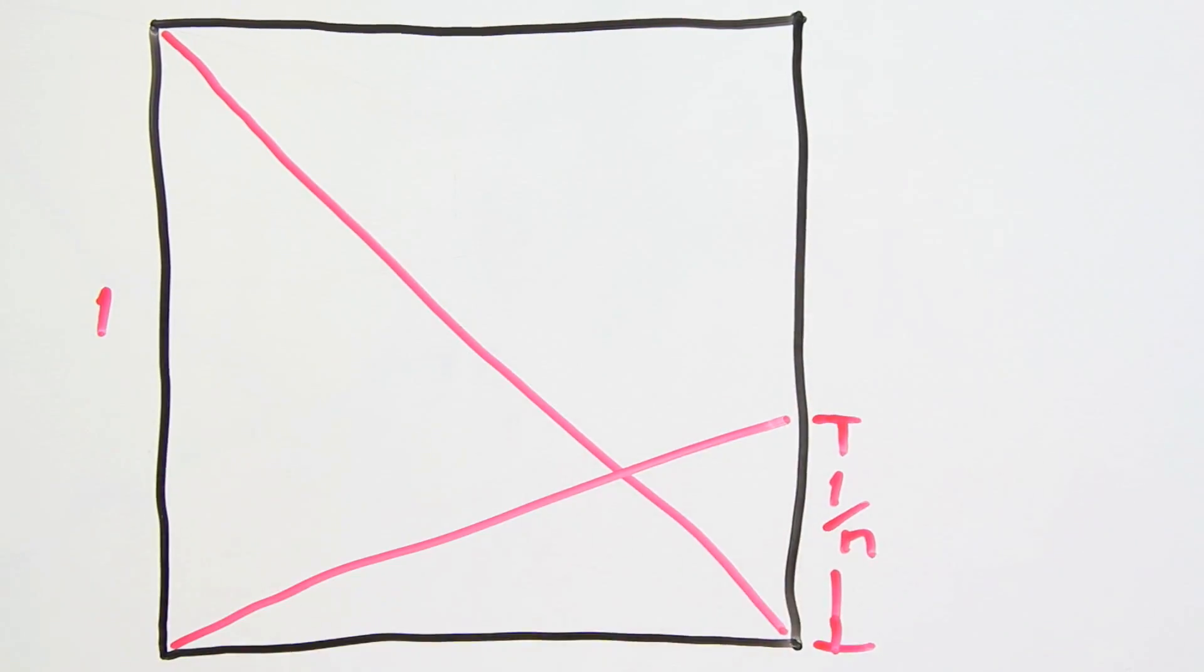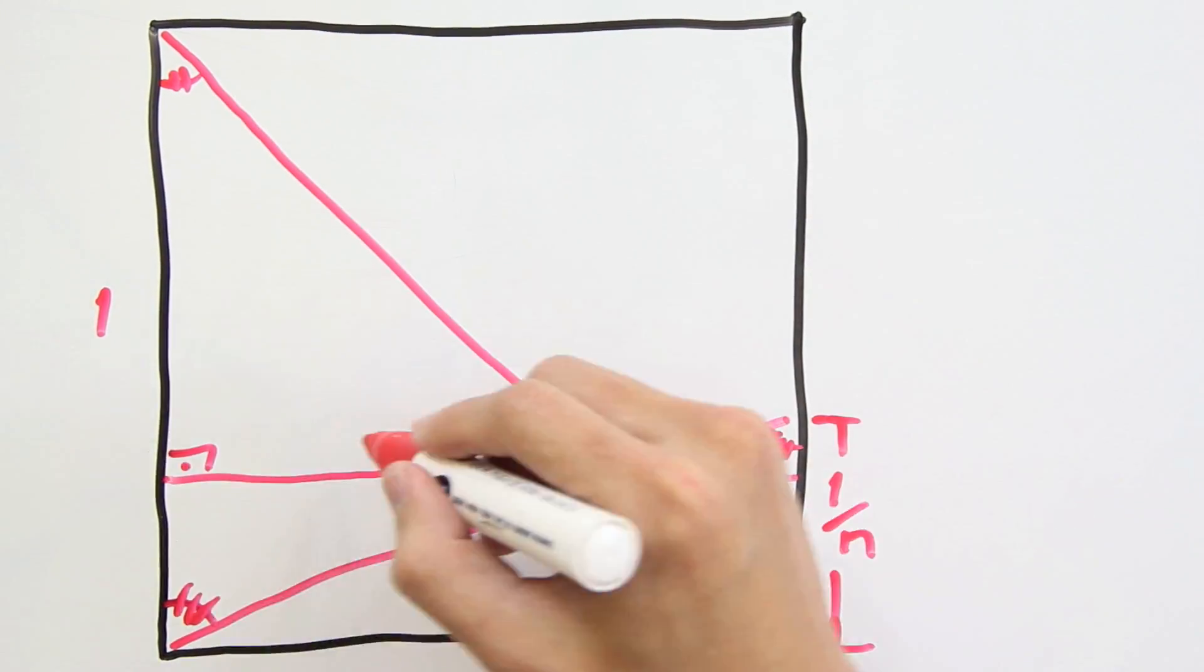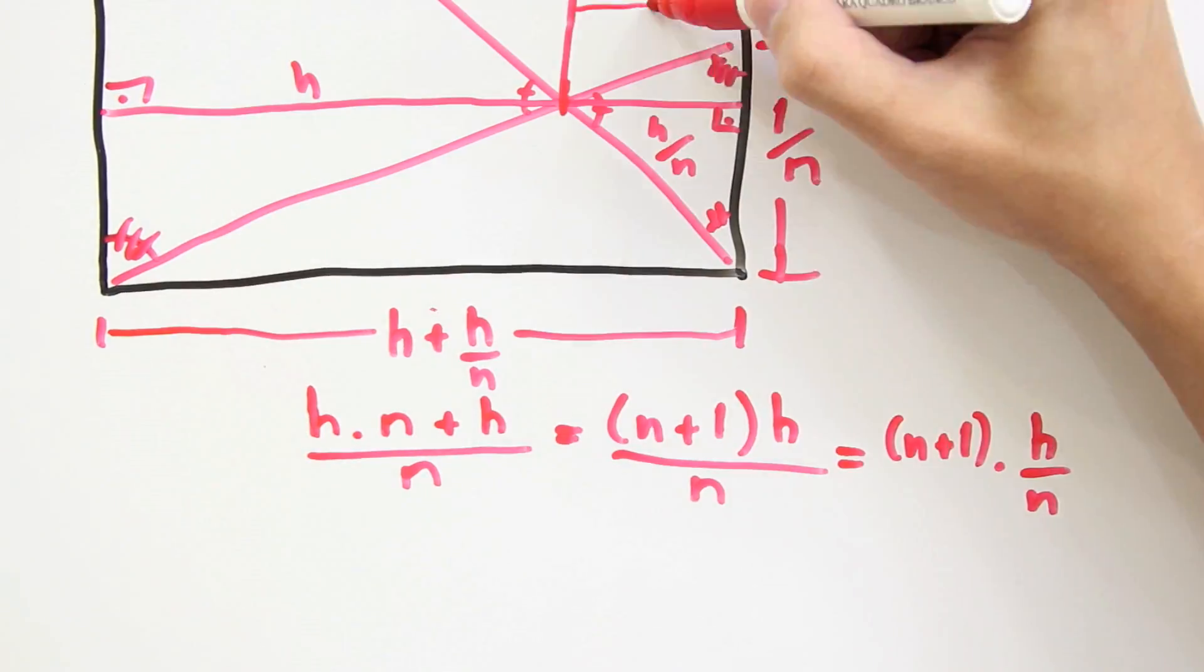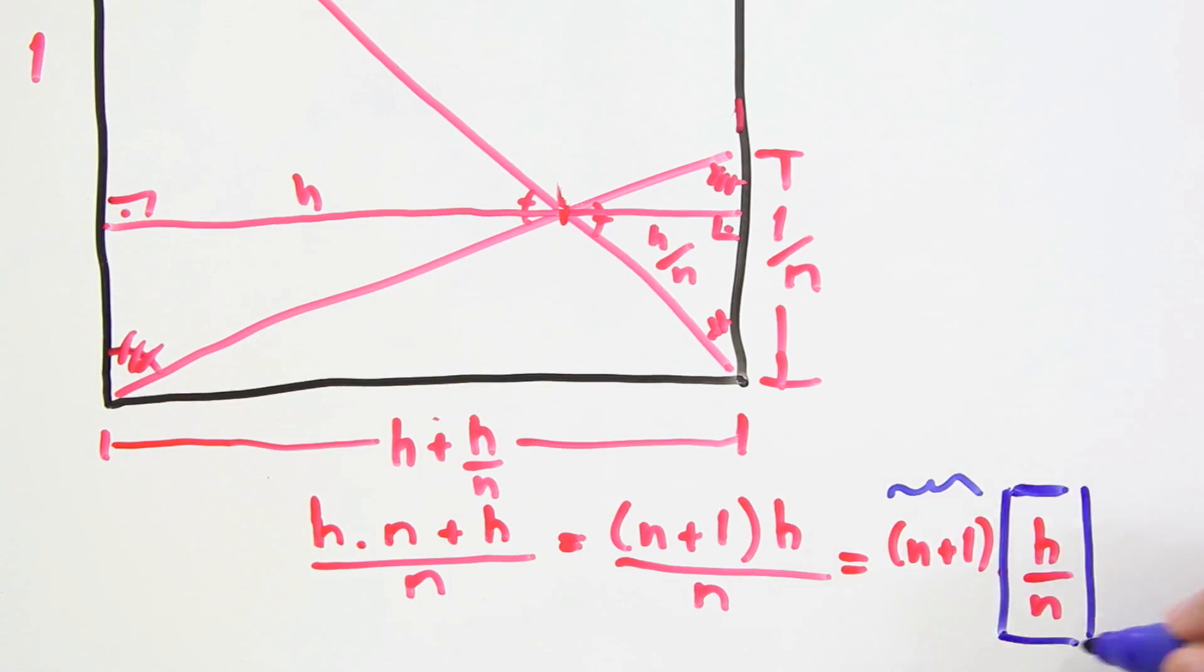The first technique works because we have two similar triangles. So, by following these equations, you can see that this side is divided now by n plus 1.